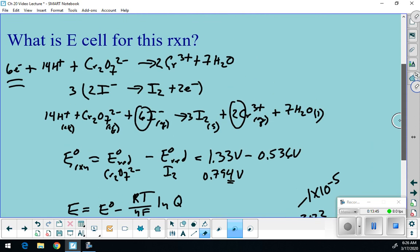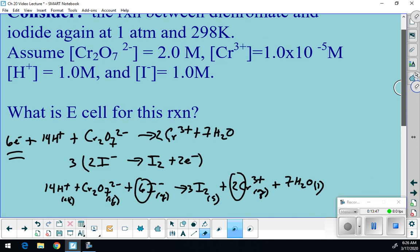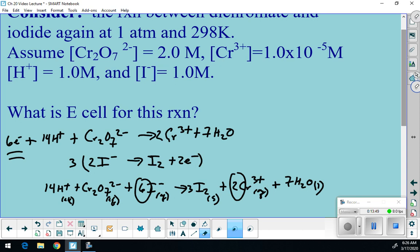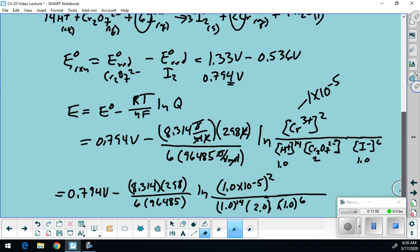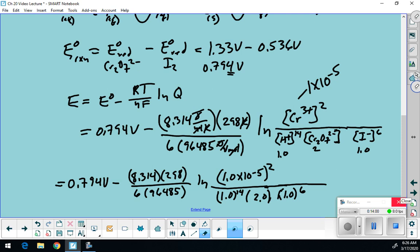So that is everything good. Up here, we have 1.0 for my iodide, and for my hydrogen, my chromium 3 is 1.0 times 10 to the minus 5th, and 2.0. I think that looks good. So now let's run the numbers.